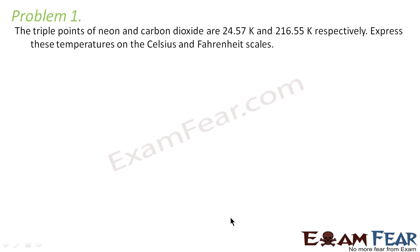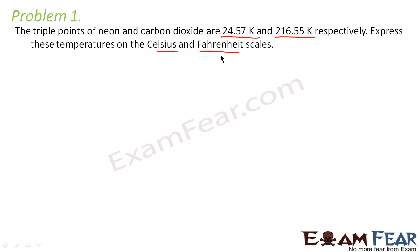Problem 1 states: the triple points of neon and carbon dioxide are 24.57 Kelvin and 216.55 Kelvin respectively. Express these temperatures on the Celsius and Fahrenheit scales.